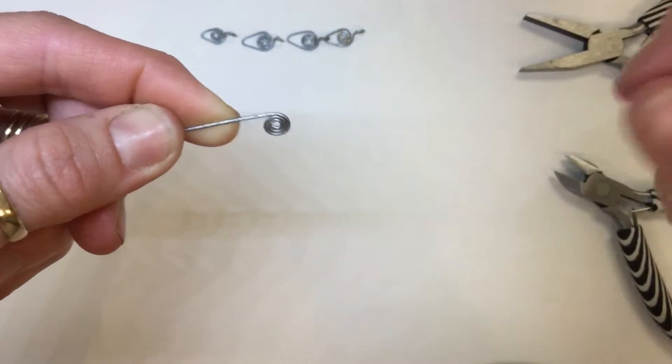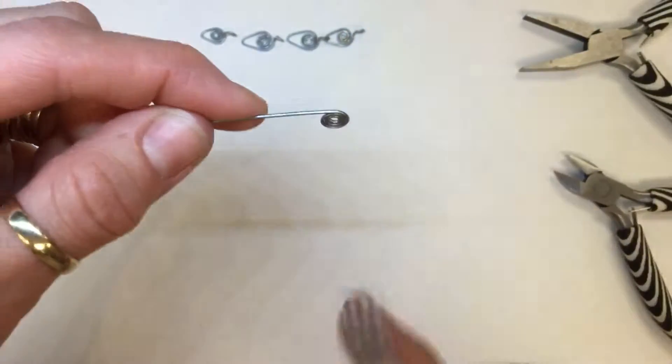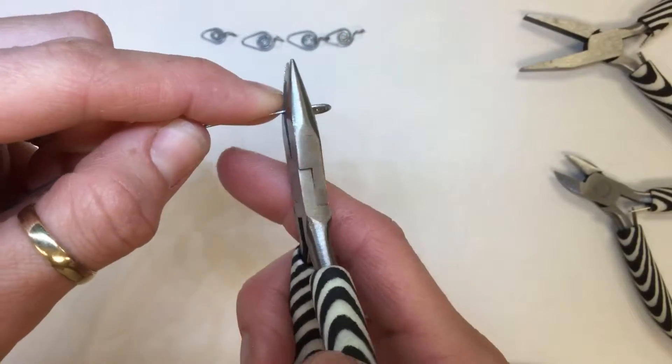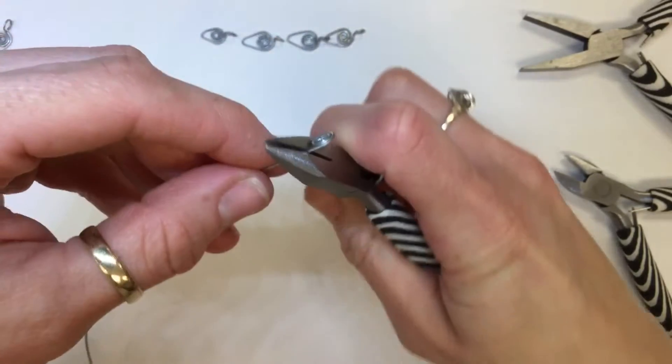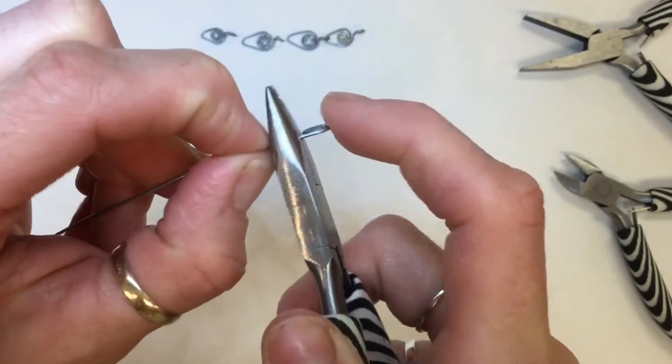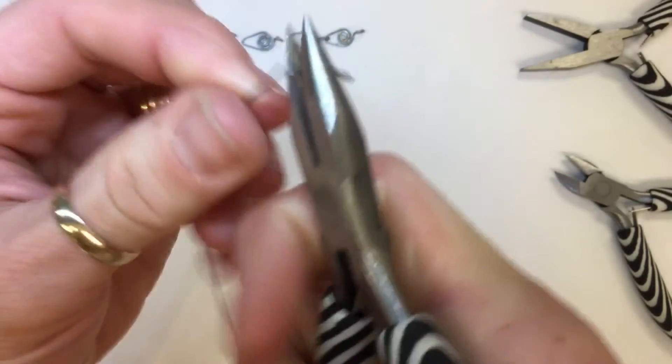Then we're going to do the angle just like the scroll, so the spiral faces down. Place your round nose pliers about halfway in, with the spiral all the way up against your pliers. I'm going to angle down and use my thumb to make a sharp 90-degree angle on there.